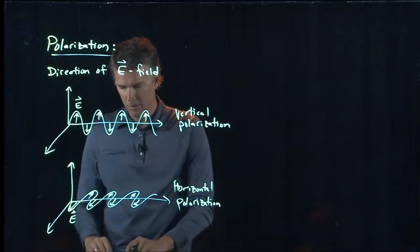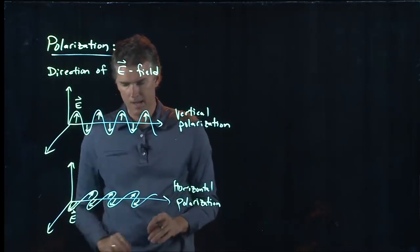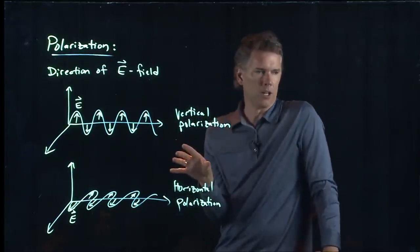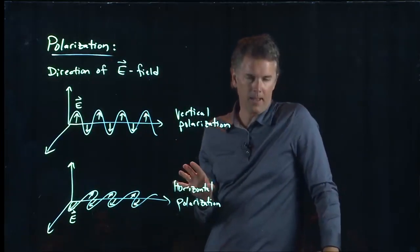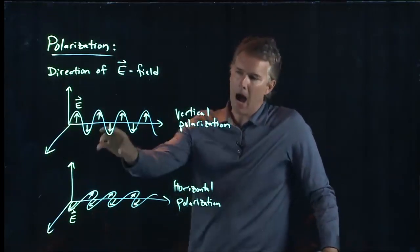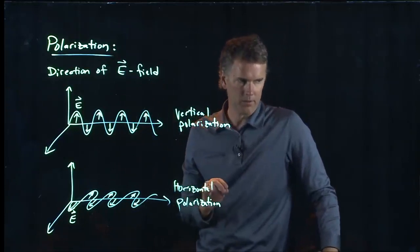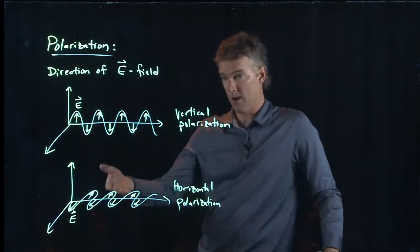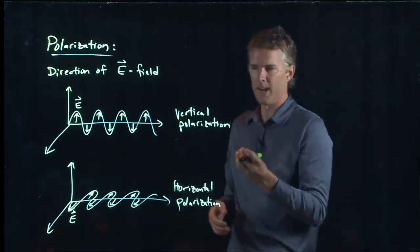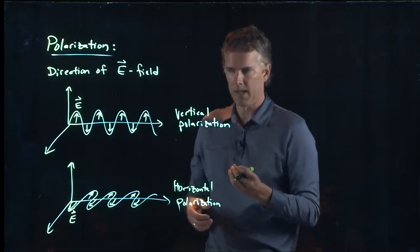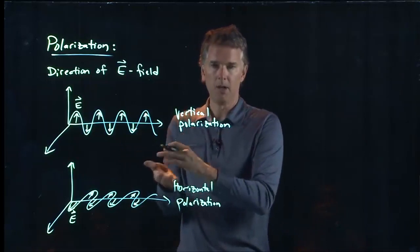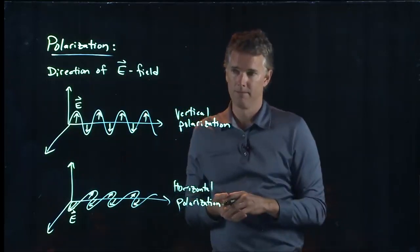You're familiar with this because of two things. One is you might have sunglasses that are polarized. And what polarized sunglasses mean is they block one of these polarizations. It turns out that the glare off the ocean or the glare off a wet street is dominantly polarized in one direction. And so, if you put on your sunglasses to just block that particular polarization, you essentially cut out the glare.